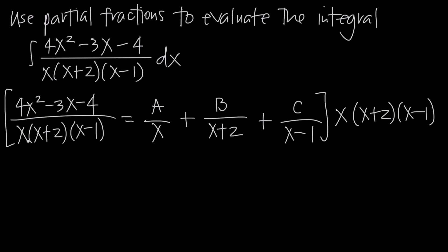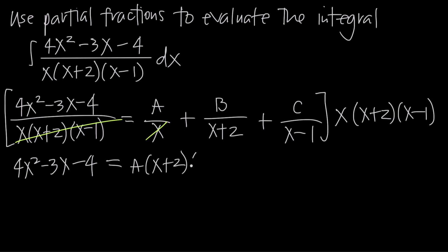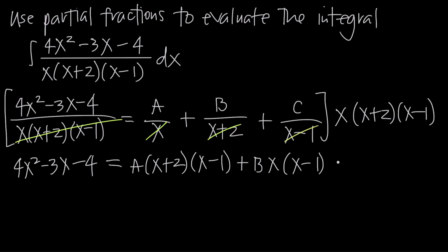When we do that, the denominator on the left cancels completely, leaving us with 4x squared minus 3x minus 4. On the right, the x cancels with the first fraction's x, leaving A times (x plus 2)(x minus 1). The x plus 2 cancels with the second fraction, leaving plus B times x(x minus 1). And x minus 1 cancels with the third, leaving plus C times x(x plus 2).